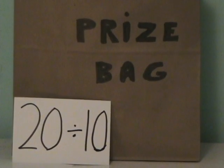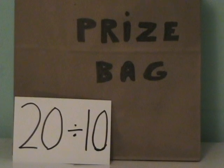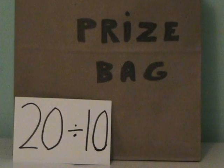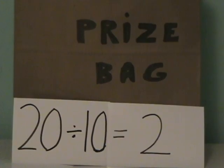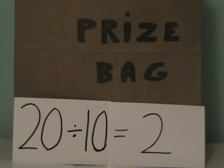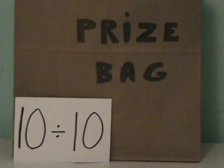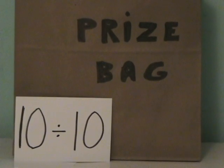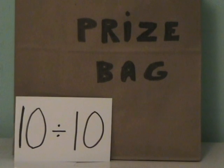20 divided by 10 — that's right — 20 divided by 10 is 2. Now we have 10 divided by 10 — that's right — 10 divided by 10 is 1.